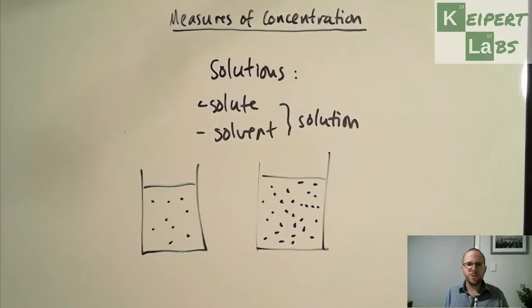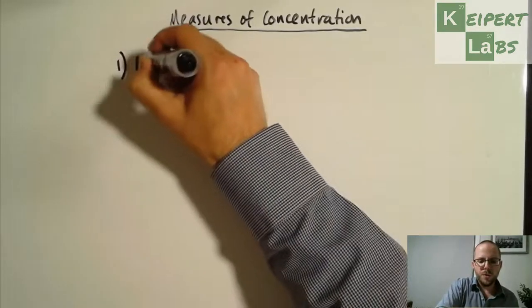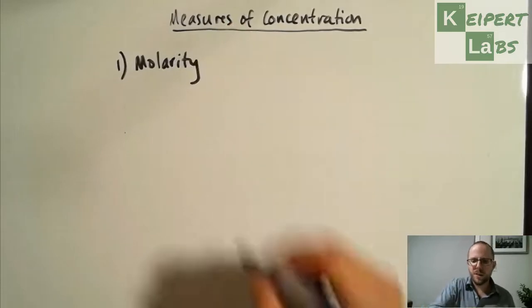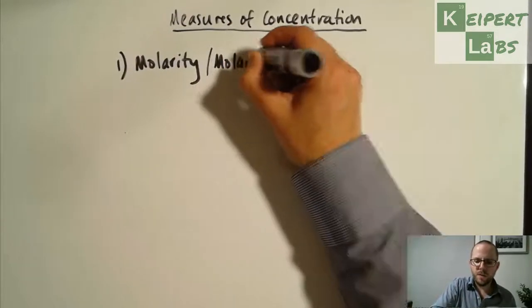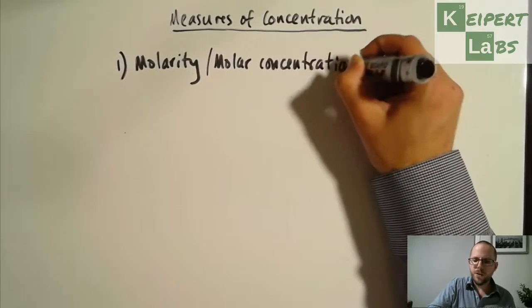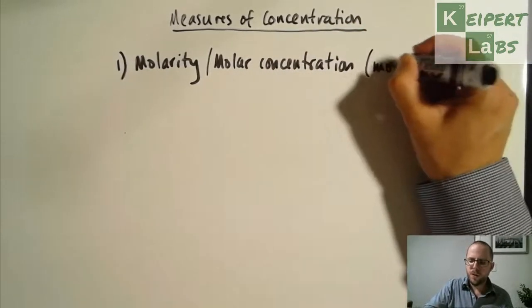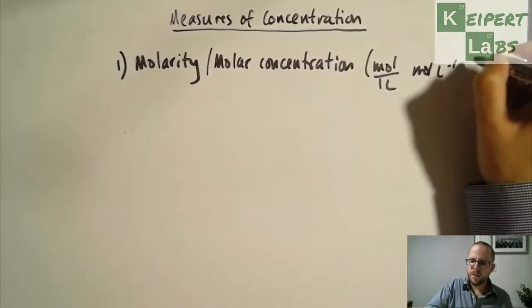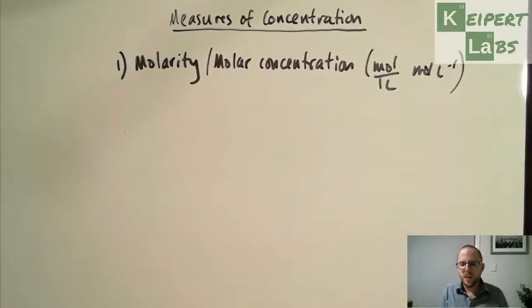We're now going to spend a bit of time talking through the different ways that we quantify concentration. So the first one that we use, which is more of a chemistry specific one, we call molarity slash molar concentration. And so the units for this one are moles for every one litre, or we might write it like this, moles per litre.